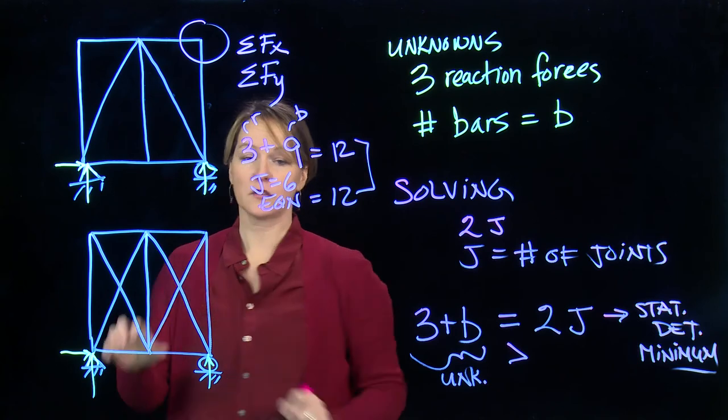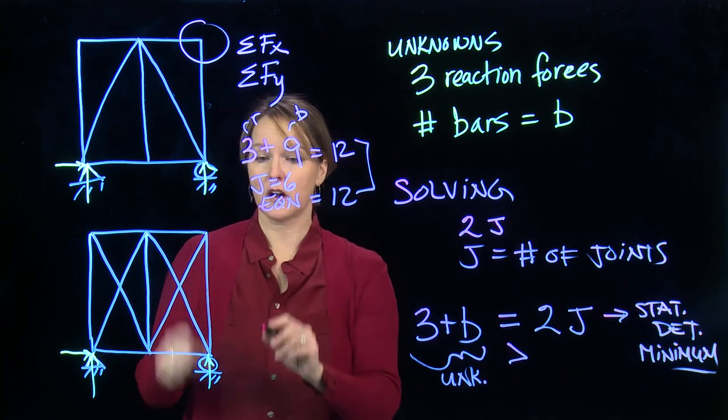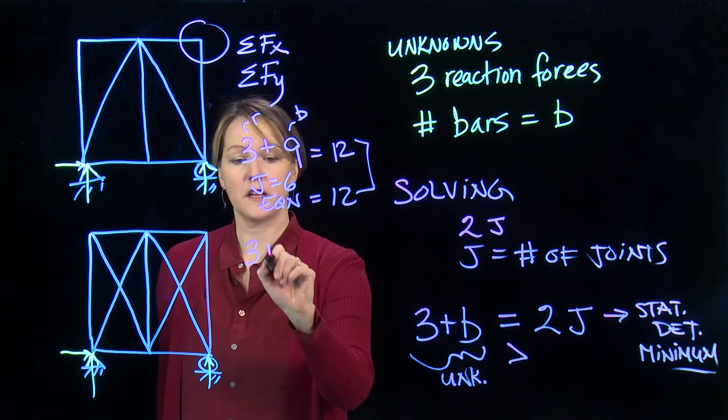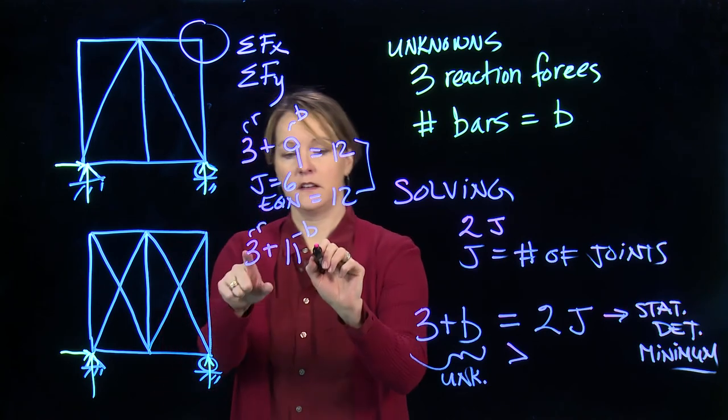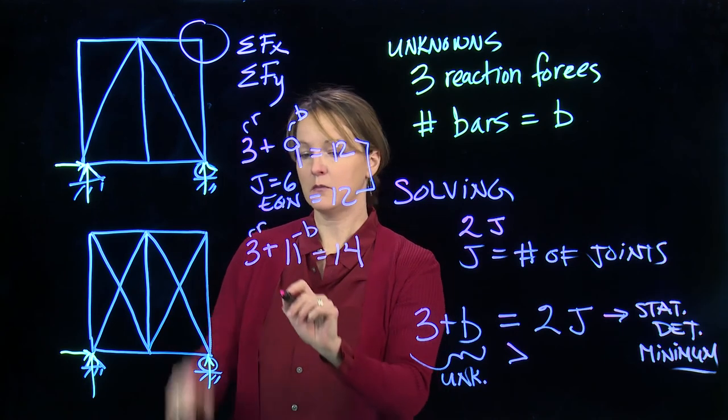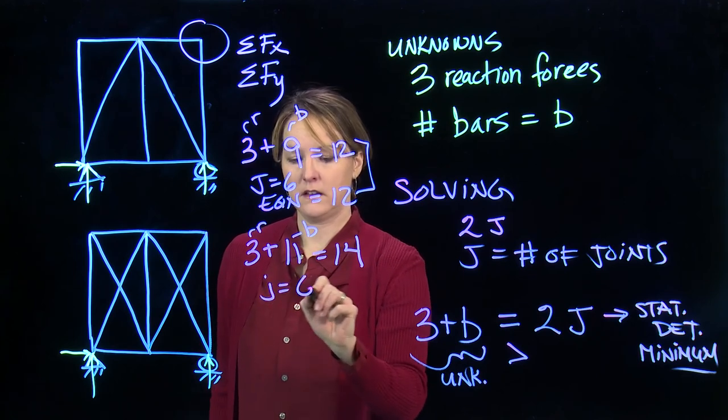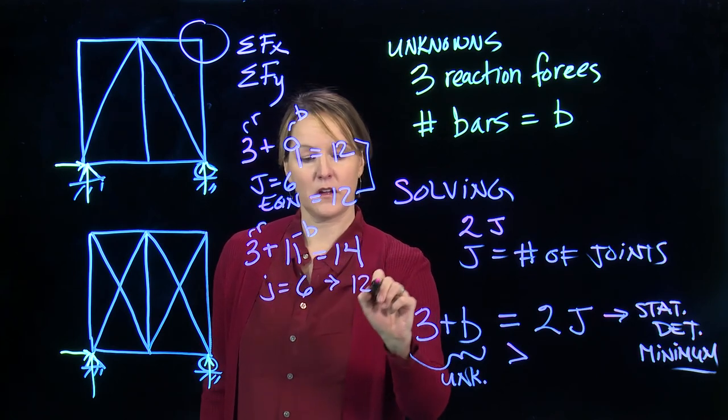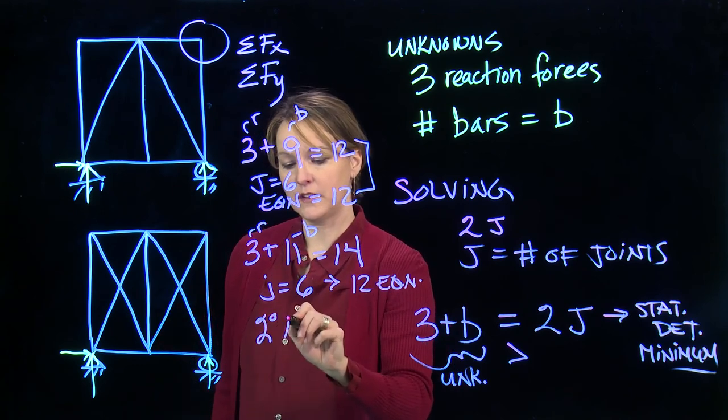If we look at this one, this one has two extra bars. I'm not putting a joint in here. I'm just going to let these two cross. So I have 3 plus 11. So B is 11 in this case. So that is going to be 14. My joints are still 6, since I'm not counting this as a joint. So I have 12 equations. I would refer to this truss as being 2 degrees indeterminate.